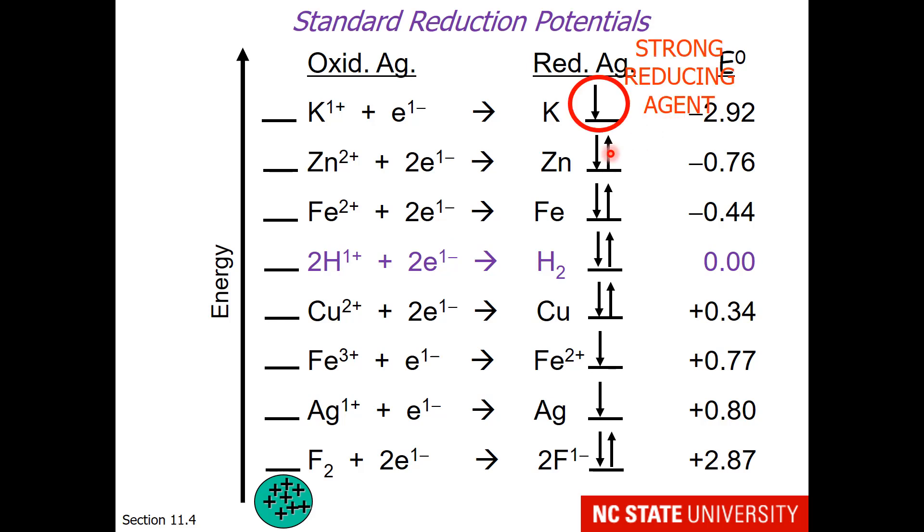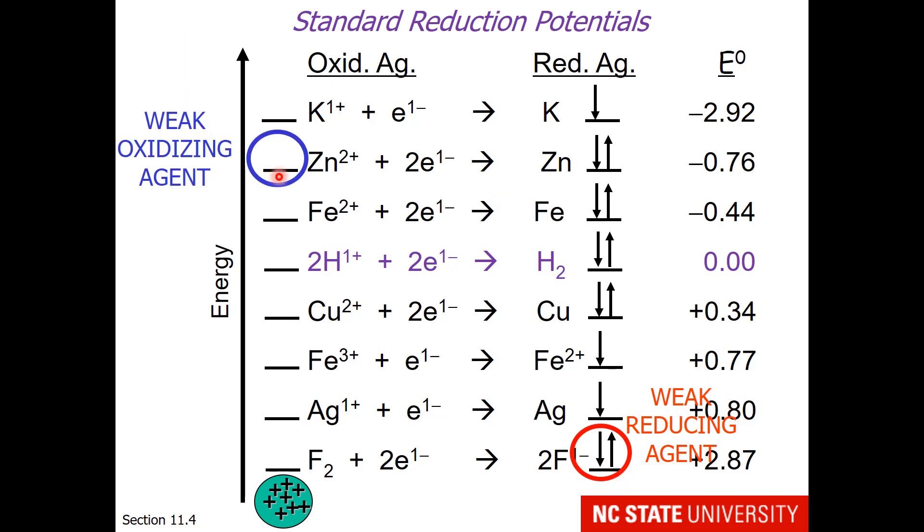So our table is very naturally set up to help us identify strong oxidizing agents and strong reducing agents. The strongest reducing agent on our table is potassium, which has a high-energy electron. The strongest oxidizing agent on our table is F2, and second best is silver 1+, which has low-energy, empty orbitals. So whenever electrons fall from high-energy orbitals to low-energy orbitals, we have a spontaneous reaction. So on our reduction table, anything falling downhill to the left is spontaneous. On the other hand, weak reducing agents have low-energy electrons, and weak oxidizing agents have high-energy, empty spaces. So anything on our table that goes uphill when we go to the left represents a non-spontaneous redox reaction.